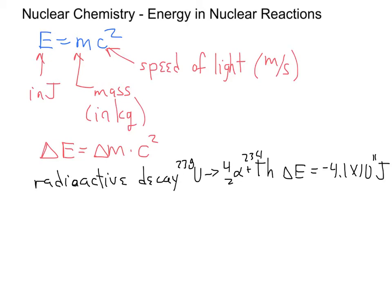If we look at the combustion of methane, for example, producing carbon dioxide and water, the energy change for that is about negative 8.2 times 10 to the 6th joules. There's about 5 orders of magnitude difference between a nuclear reaction and a chemical reaction.